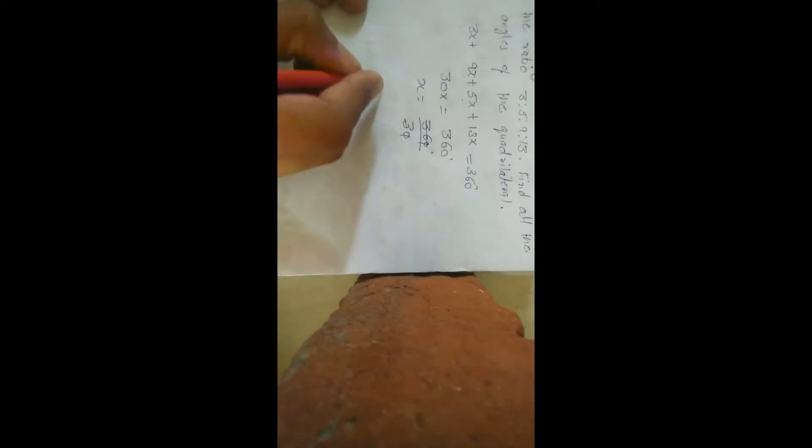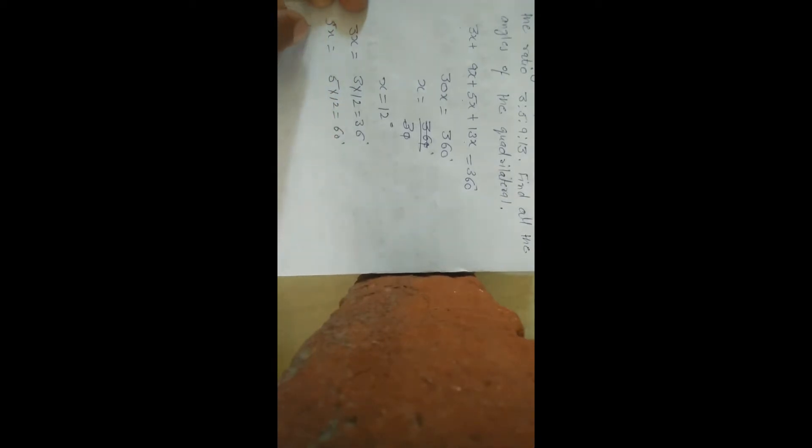3 times 12 is 36 degrees. The first angle is 3x, 12 is 36. Second angle is 5x, 5 times 12 is 60 degrees. Third angle is 9x, 9 times 12 is 108 degrees. Fourth angle is 13x, 13 times 12 is 156 degrees.